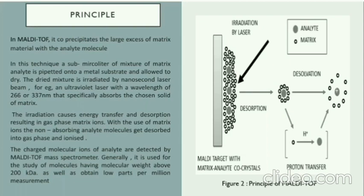The dried mixture is then irradiated by nanosecond laser beam, for example an ultraviolet laser with a wavelength of 266 or 337 nanometers, sufficient enough that specifically absorbs the chosen matrix.